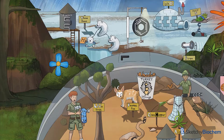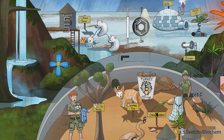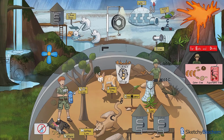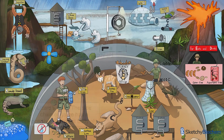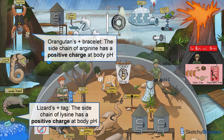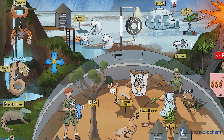Let's now turn your attention to the left side of the zoo, which has been converted to a jungle. In this area, we'll talk about the basic amino acids. Note the water pools and waterfalls because the basic amino acids are also hydrophilic. We drew some basic soap in the jungle with an orangutan, lizard, and hissing snake to help you remember the basic amino acids: arginine, lysine, and histidine. Notice the side chains of arginine and lysine have a positive charge — see the orangutan's plus bracelet and the lizard's positive tag? Arginine and lysine are prevalent in histone proteins. Histones need to interact with negatively charged DNA, and their positive charge enables them to do so. This positive-negative relationship is really important in the regulation of transcription.